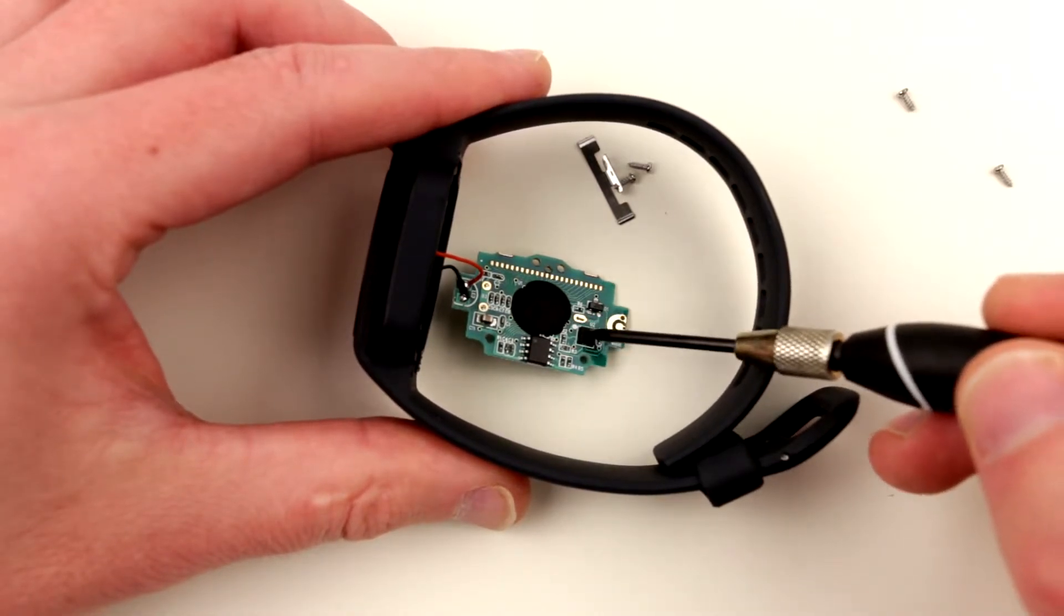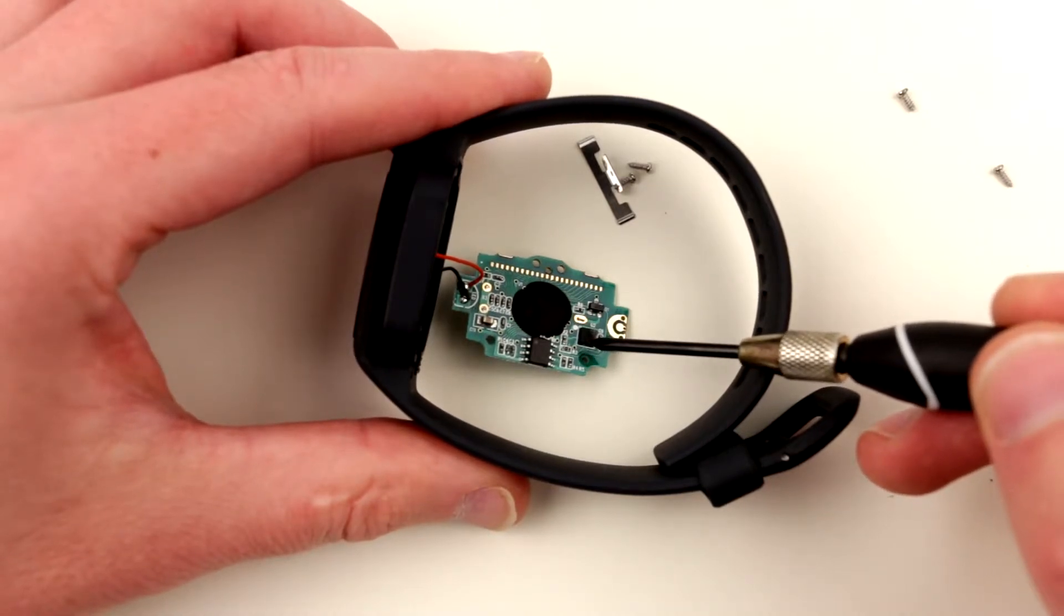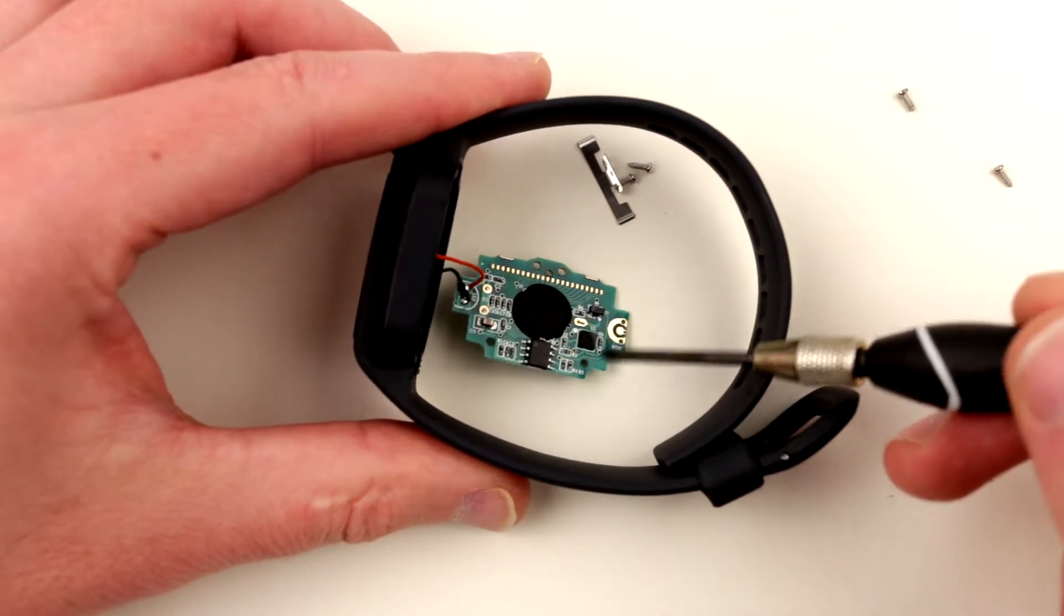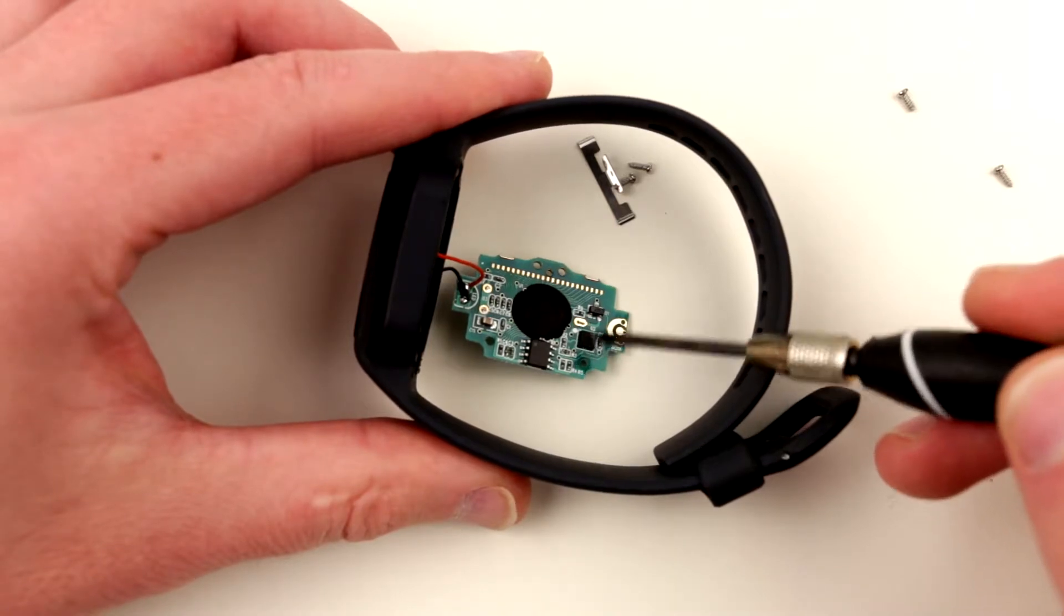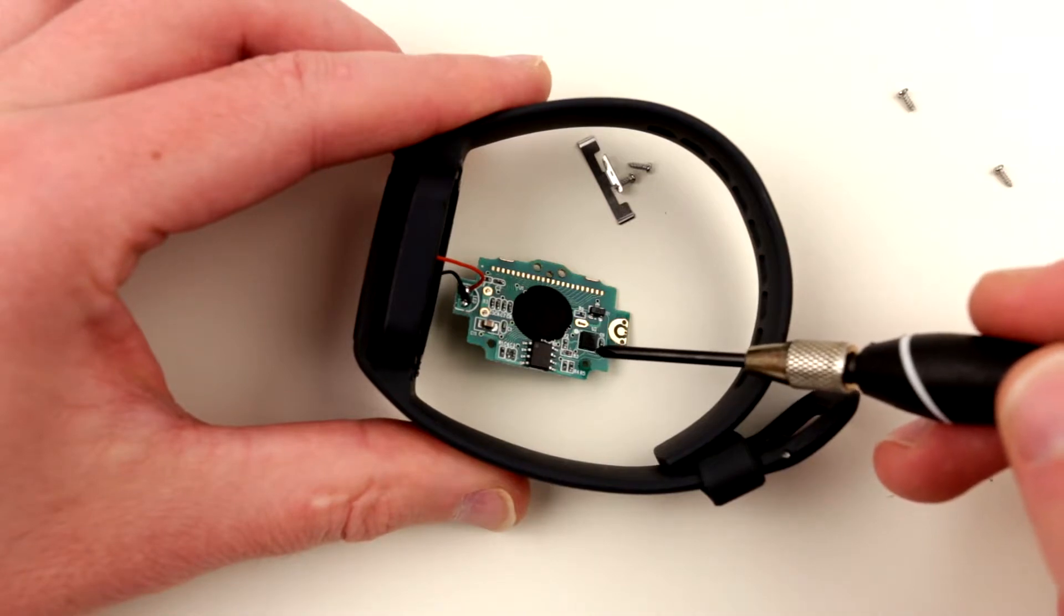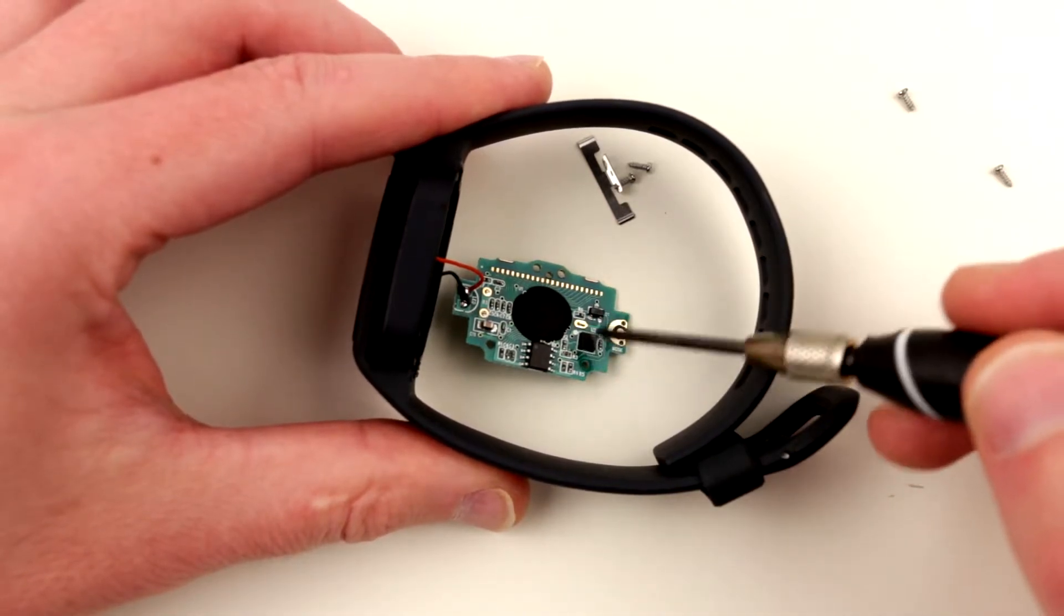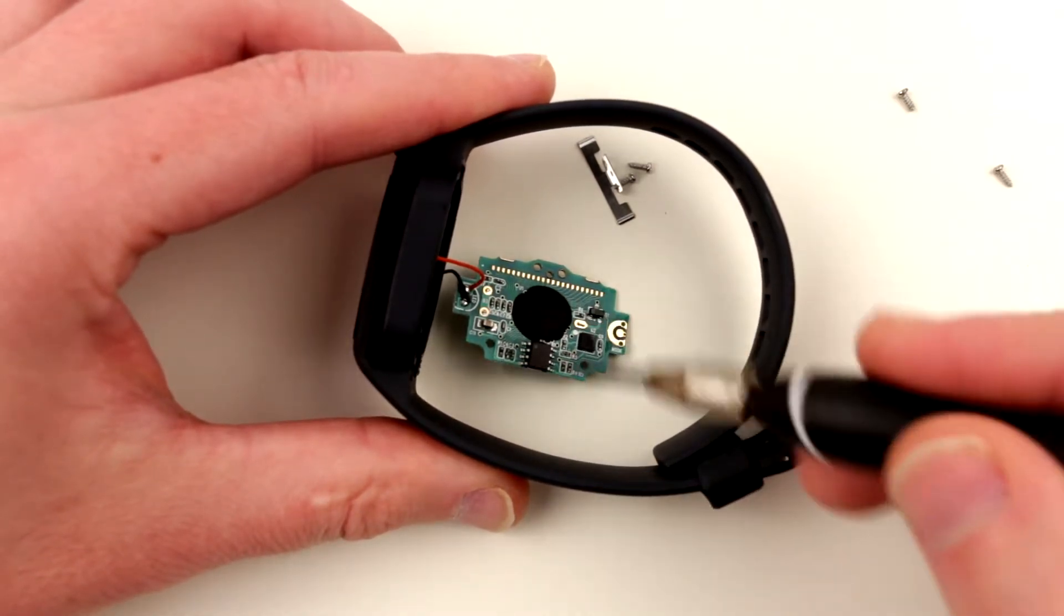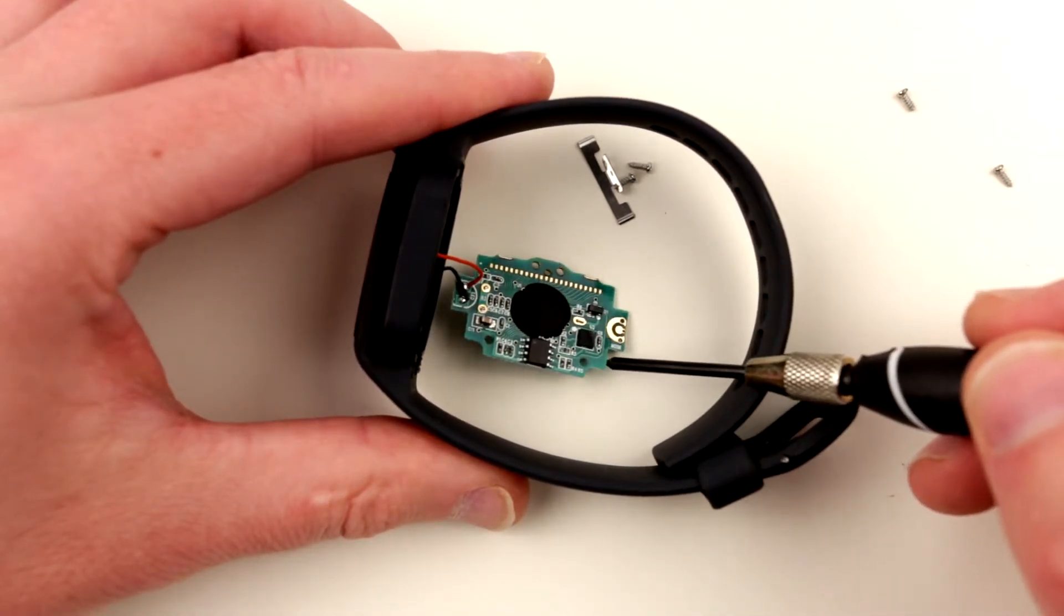But this guy over here, this BGA package of some sort, is a KX CJK triple-axis accelerometer from Kionix. This is probably the most expensive part over here because I just checked the price and it costs like $2.25 or something like that in thousands. That's the most expensive part over here out of this four dollars.